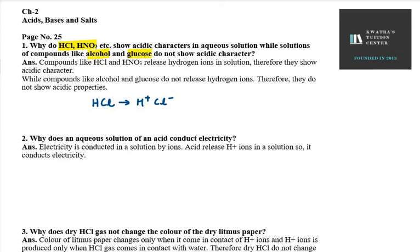H+ ions are what give them acidic character. That is why compounds like HCl and HNO3 show acidic character. If we talk about alcohol or glucose, these compounds never form H+ ions. So if H+ ions are not formed, therefore they won't show any acidic properties. In HCl, H+ ions are being formed, and due to those H+ ions, they are acidic in nature.